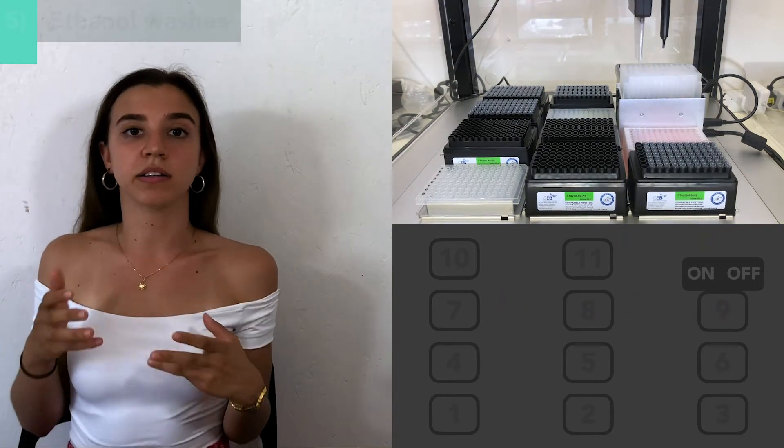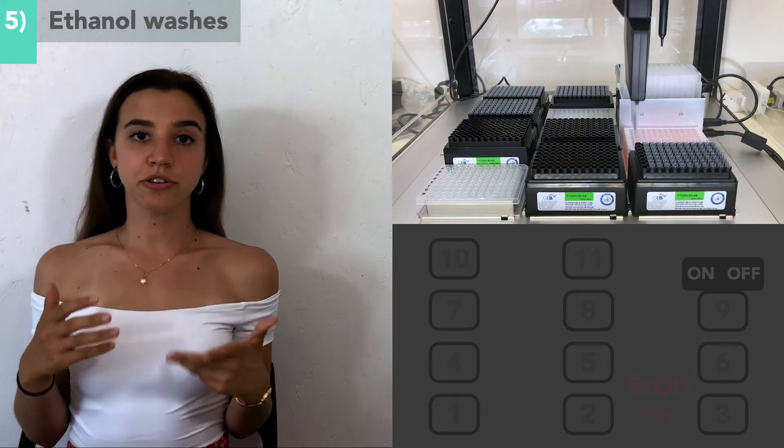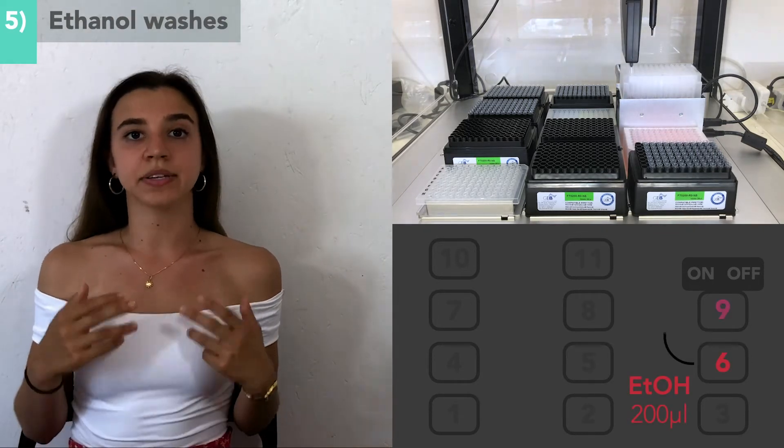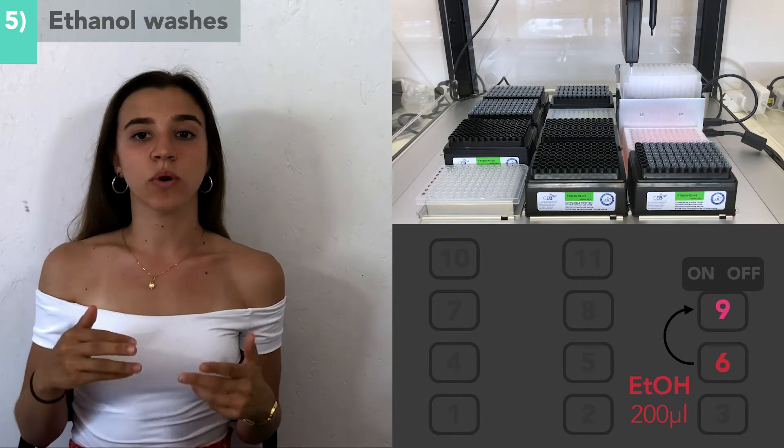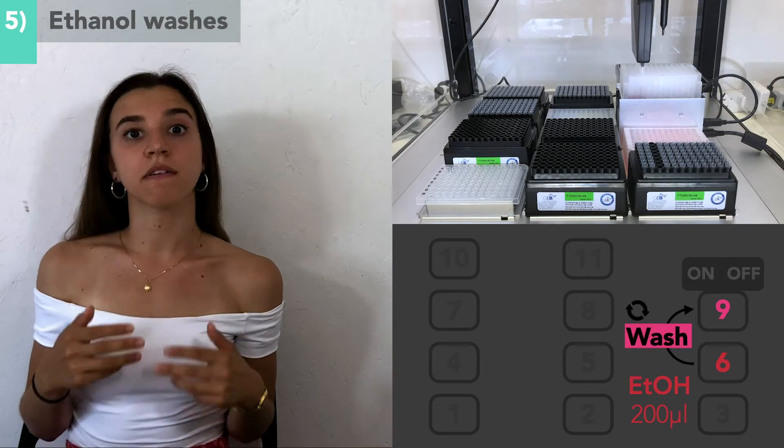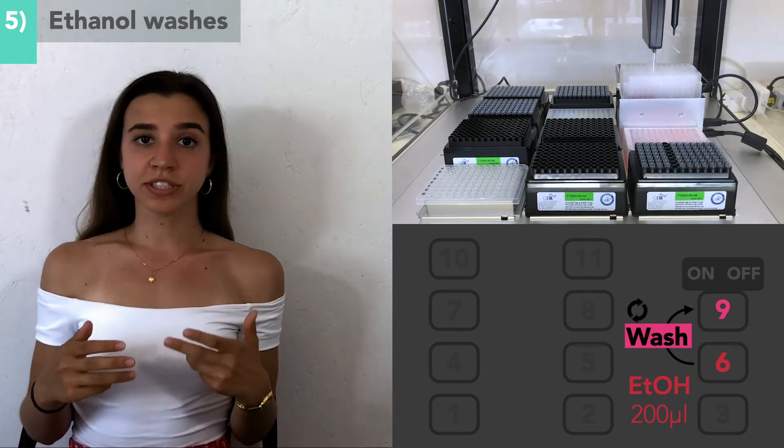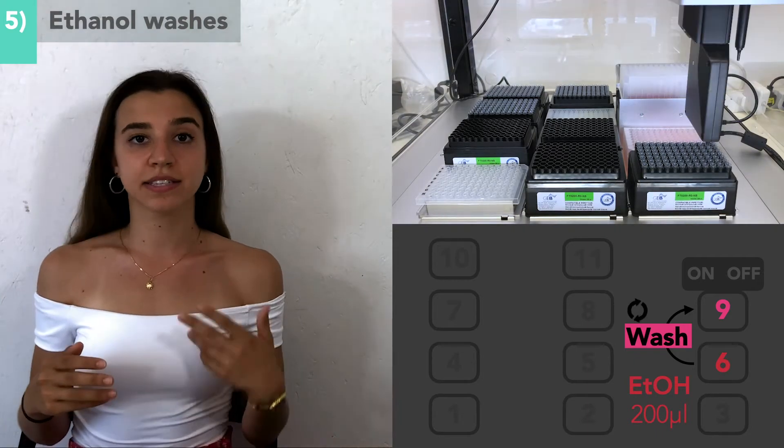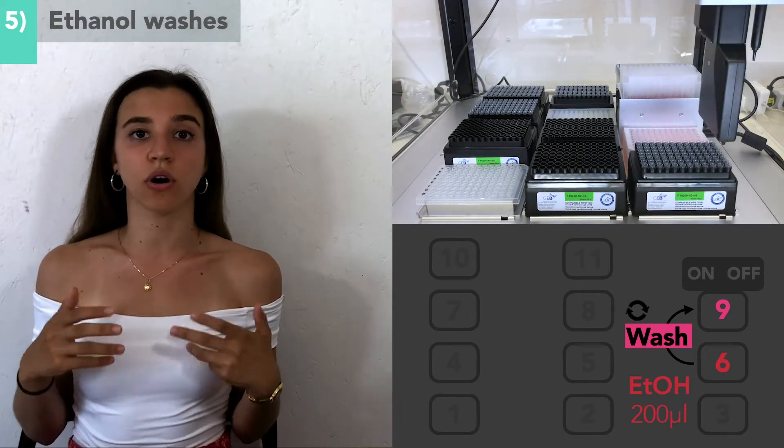Now comes the multiple rounds of ethanol washes. 200 microliters of ethanol from slot 6 will be added to each sample well in the same way that was done for the isopropanol wash. This will be repeated four times. The wash stages are very thorough to remove any contaminants as this determines the purity of your final RNA sample.